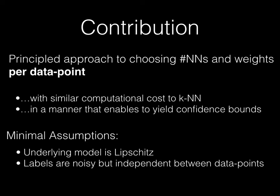In this work, we develop a principled approach to choosing the optimal number of neighbors and the optimal weights per data point. We develop an algorithm that finds this optimal number of neighbors and weights with the same computational cost as k-nearest neighbor rules. Our method also enables to yield confidence bounds.